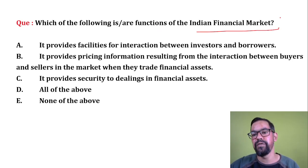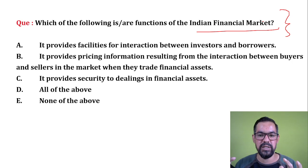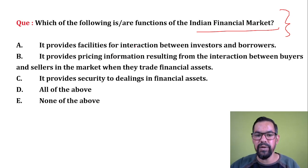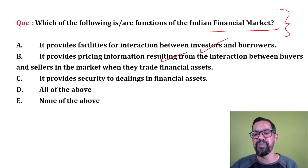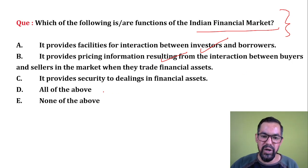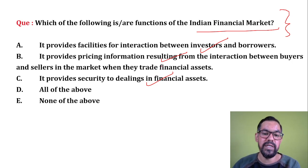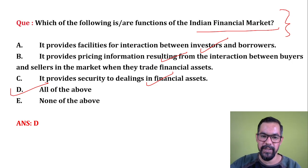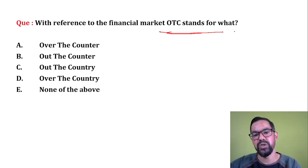Which of the following is a function of India's financial market? Financial markets facilitate interaction between investors and borrowers. They provide pricing information resulting from the interaction between buyers and sellers — so you can know the price of any commodity, share, or currency. They provide security for dealing in financial assets through stock exchanges and brokerages. Option D — all of the above — is the correct answer.